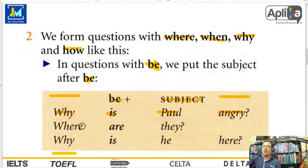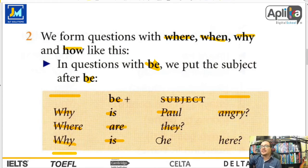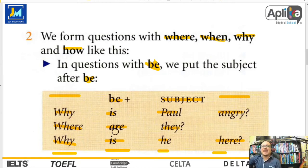Otro ejemplo: Where are they? ¿Dónde están ellos? Primero la question word, luego el verbo to be, y luego el sujeto. Why is he here? Primero question word, verbo to be, sujeto — él — aquí. ¿Por qué está él aquí? Esta es una perfecta forma y ejemplo de darles a conocer la estructura de las question words.